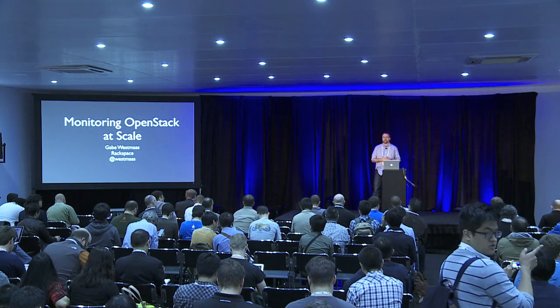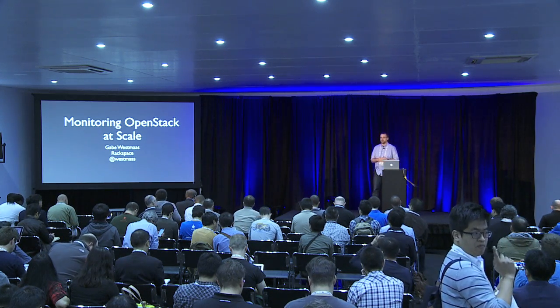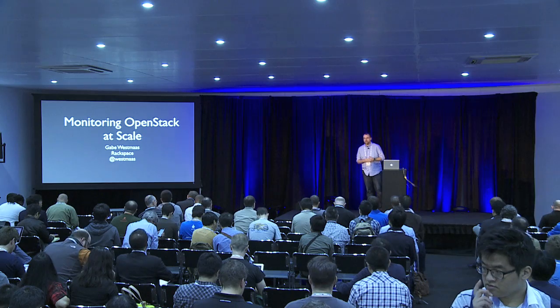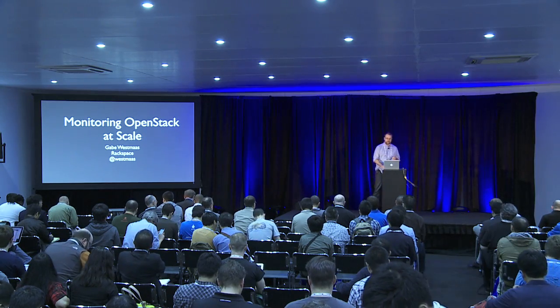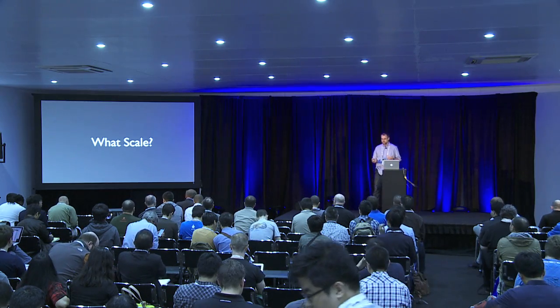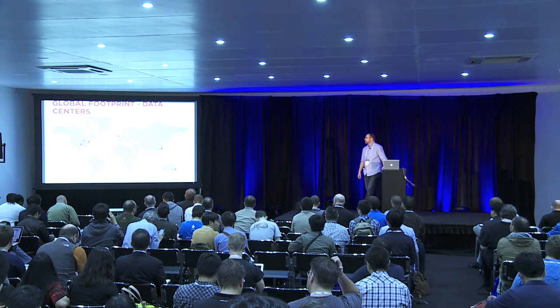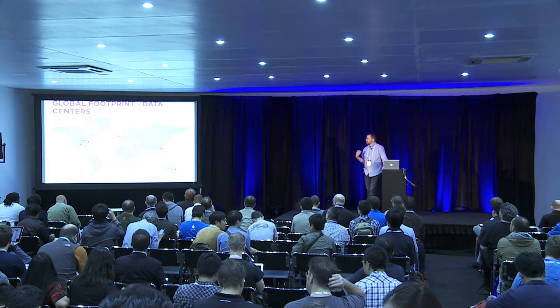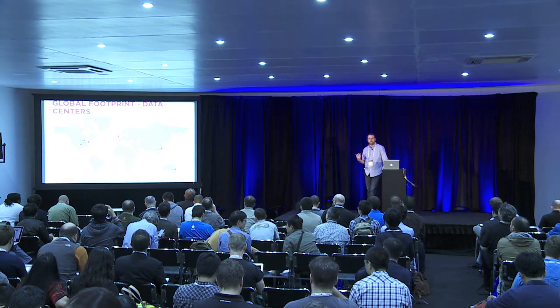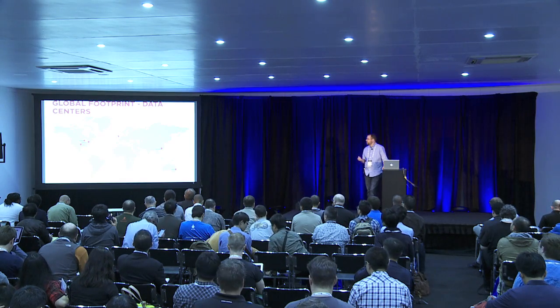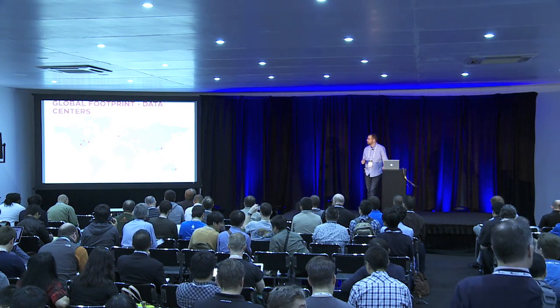I'd like to talk to you a little bit about monitoring OpenStack at scale. The very first question you should be asking yourself is: what does scale mean in this particular case? At Rackspace, we have six different data centers across the world. Three of those are in the US. We have one in London, one in Sydney, and our latest one is actually here in Hong Kong.